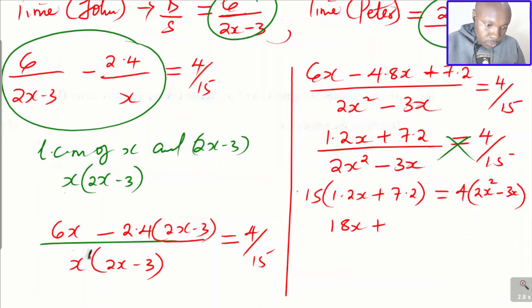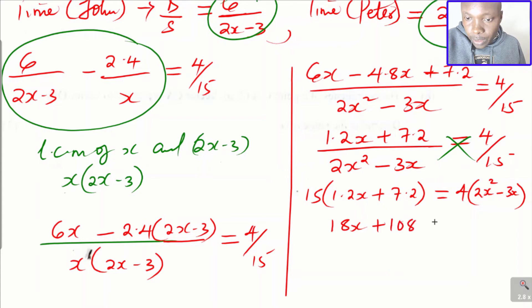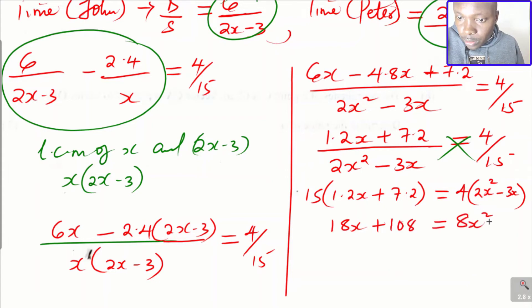Expanding both sides gives 18x + 108 equals 8x² subtract 12x.